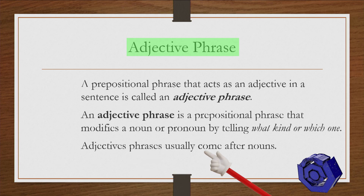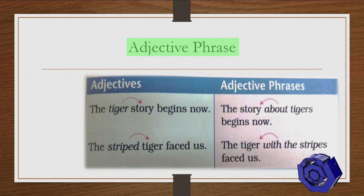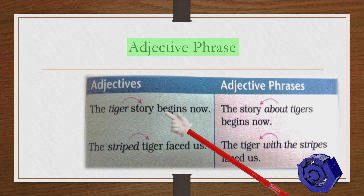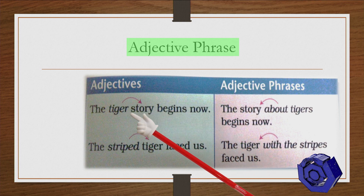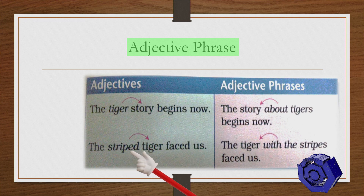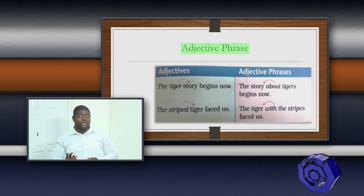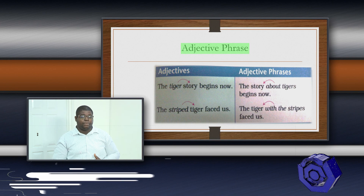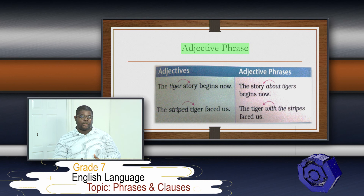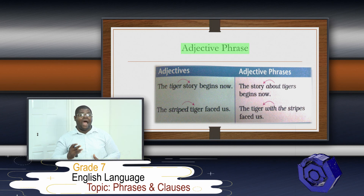When we talk about adjectives in general, they come before nouns: 'the tiger story begins now' — 'tiger' modifies 'story.' But with adjective phrases, the information comes after: 'the story about tigers begins now' — 'about tigers' comes after the noun. Similarly, 'the tiger with the stripes faced us' — 'stripes' comes after. When dealing with adjective phrases, they come after the noun.